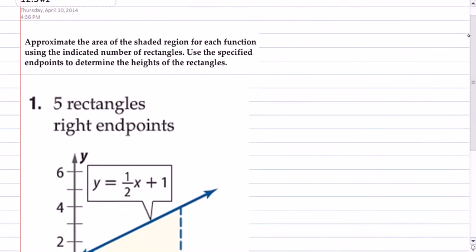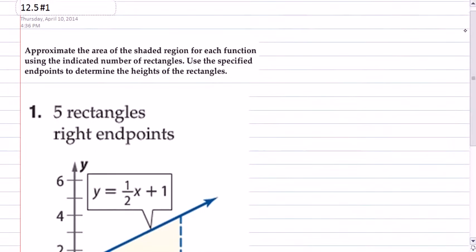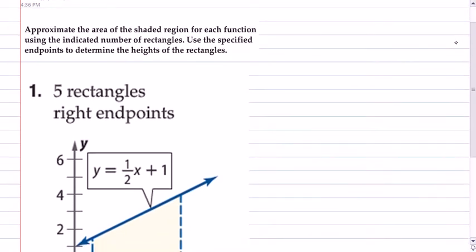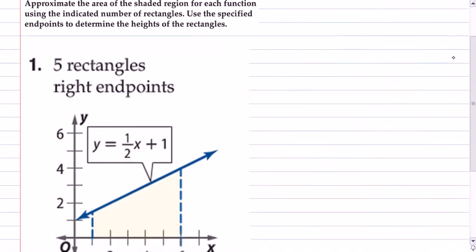The directions are approximate the area of the shaded region for each function using the indicated number of rectangles. Use the specified endpoints to determine the heights of the rectangles.